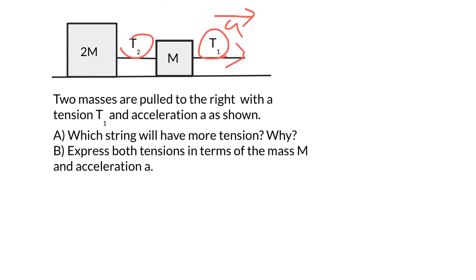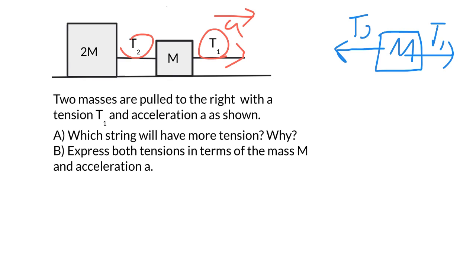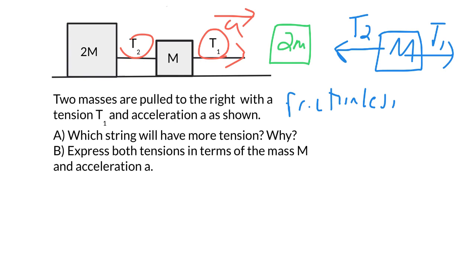The first step should be to draw our free body diagram. I'm going to do it on mass M first. Notice we have a tension T1 going to the right, and we also have a tension T2 going to the left. This problem doesn't mention friction, so we're just going to assume it's frictionless. Now let's look at the second mass. The second mass is bigger — this mass is 2M — and the FBD on this has only one force, and that's going to be T2 going to the right.